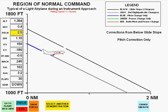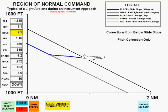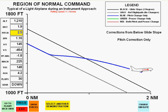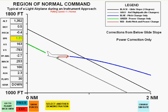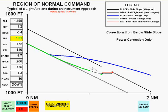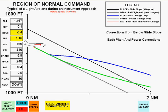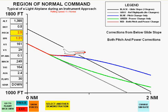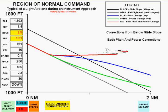The first correction will be with pitch only. Notice the fast change in flight path that falls off slightly as the airspeed reduces. The second change is with power only. Notice the much slower change in flight path compared to pitch only. Next, we will use both pitch and power to change flight path. Notice the flight path changes fast and does not drop off.